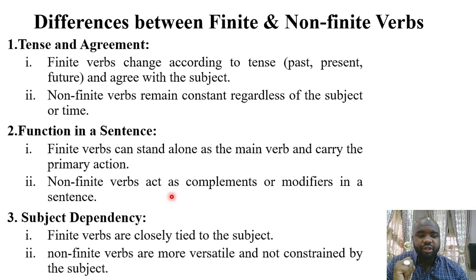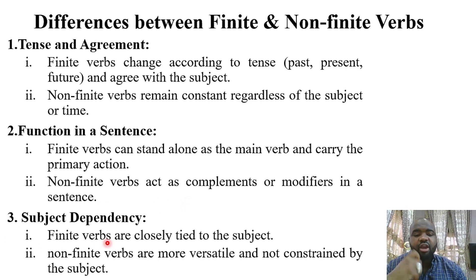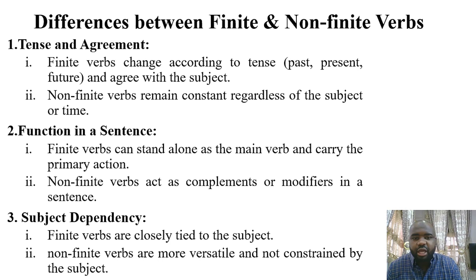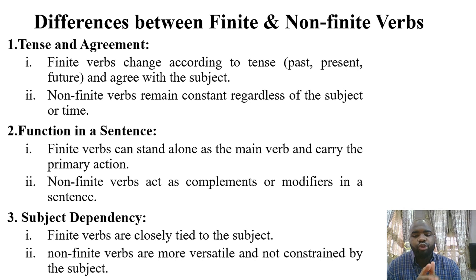The third difference is subject dependency — whether a verb is tied to the subject or not. Finite verbs are closely tied to the subject. Non-finite verbs are more versatile and not constrained by the subject; they can serve as subjects themselves, as modifiers, or as complements. They are versatile, while finite verbs are directly linked to the subject and carry the function of the main verb.